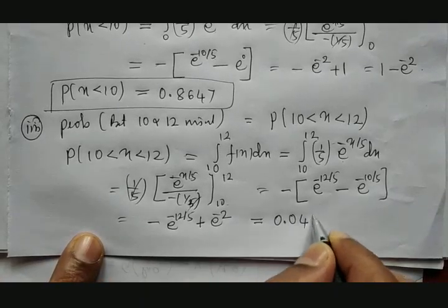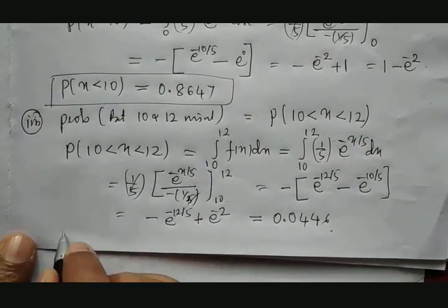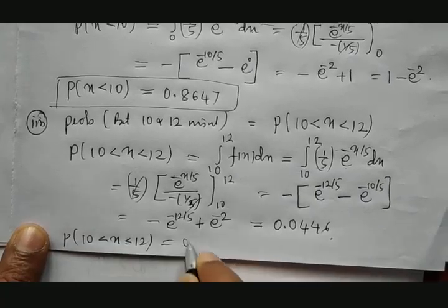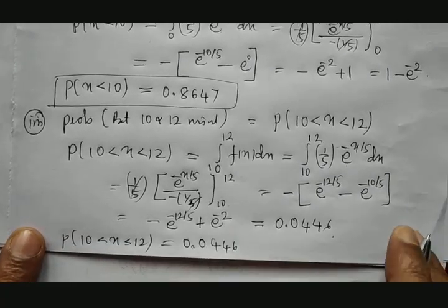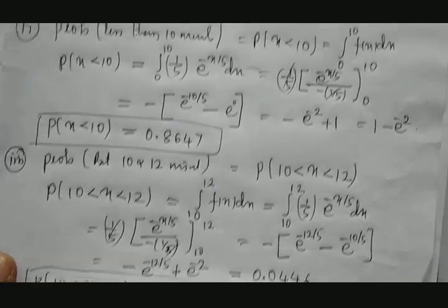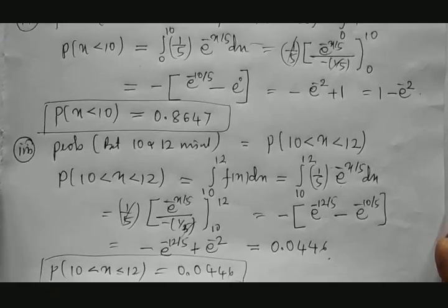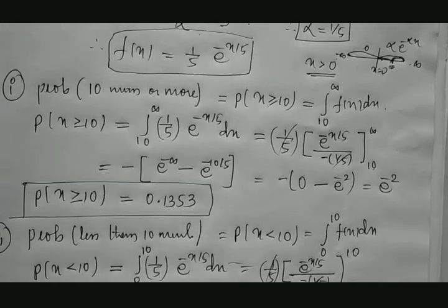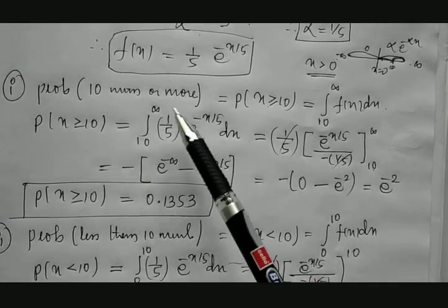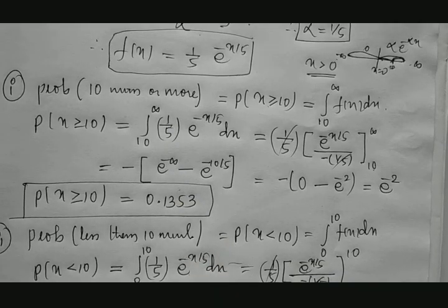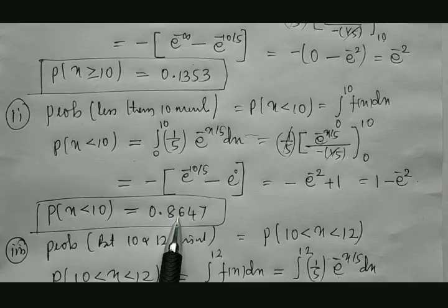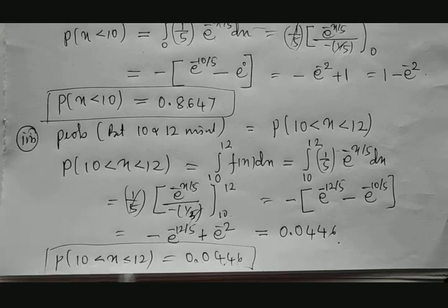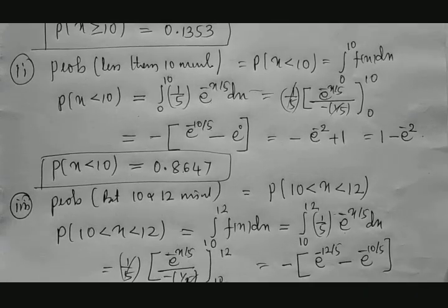P(10 < X < 12) ≈ 0.0446, meaning a 4.46% chance the rain lasts between 10 and 12 minutes. To summarize: the probability the rain continues beyond 10 minutes is 13.53%, the probability it ends within 10 minutes is 86.47%, and the probability it lasts between 10 and 12 minutes is 4.46%. Thank you.